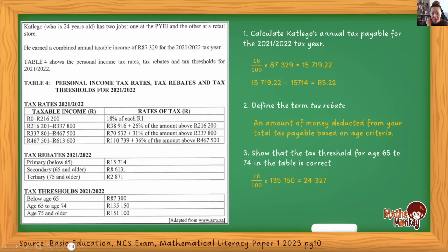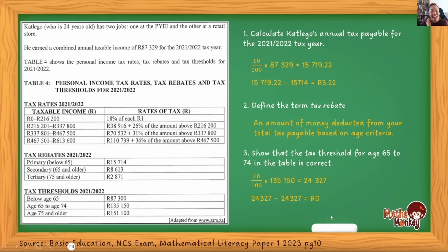If you are aged 65 and older, you get two rebates: R15,714 and R8,613, which added together gives R24,327. So if I take what they calculated they have to pay — R24,325 — minus the rebates they qualify for — R24,327 — the result is effectively zero. This proves that the tax threshold, the maximum income to pay no tax, is R135,150 for ages 65 to 74.